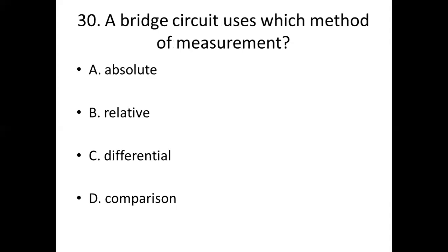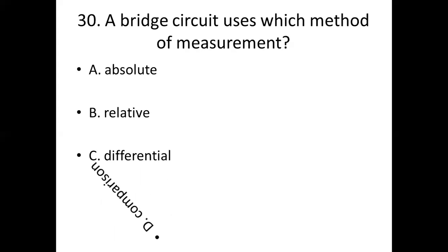Thirtieth bit. A bridge circuit uses which method of measurement? Option A: absolute. Option B: relative. Option C: differential. Option D: compression. Answer: Option D, compression.